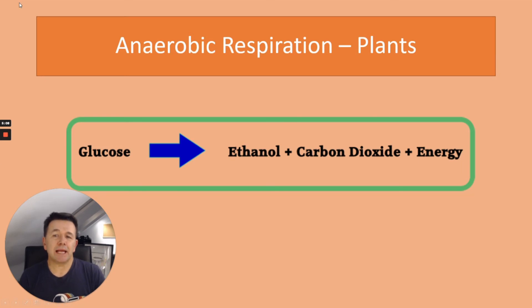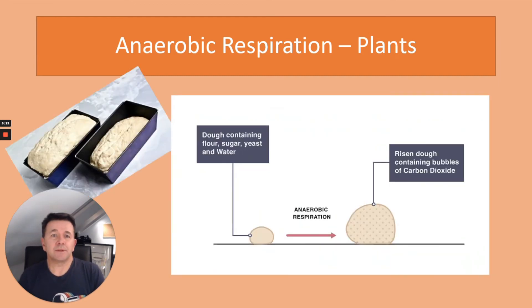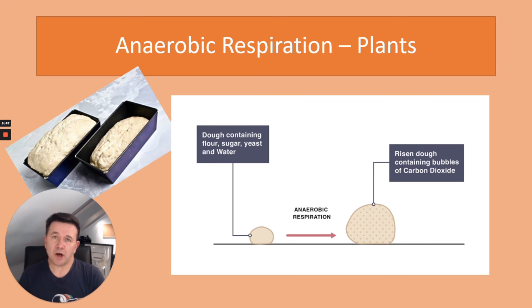Anaerobic respiration in plants — again without oxygen. In this case glucose produces ethanol, which is a form of alcohol, and carbon dioxide plus some energy. This is really useful for humans because we can use anaerobic respiration in yeast. Yeast is a fungus — when you give it sugar and water, it releases carbon dioxide, and that is used to rise dough, so it contains bubbles of carbon dioxide. The reason bread doesn't contain alcohol is that putting it in the oven gets rid of any ethanol.